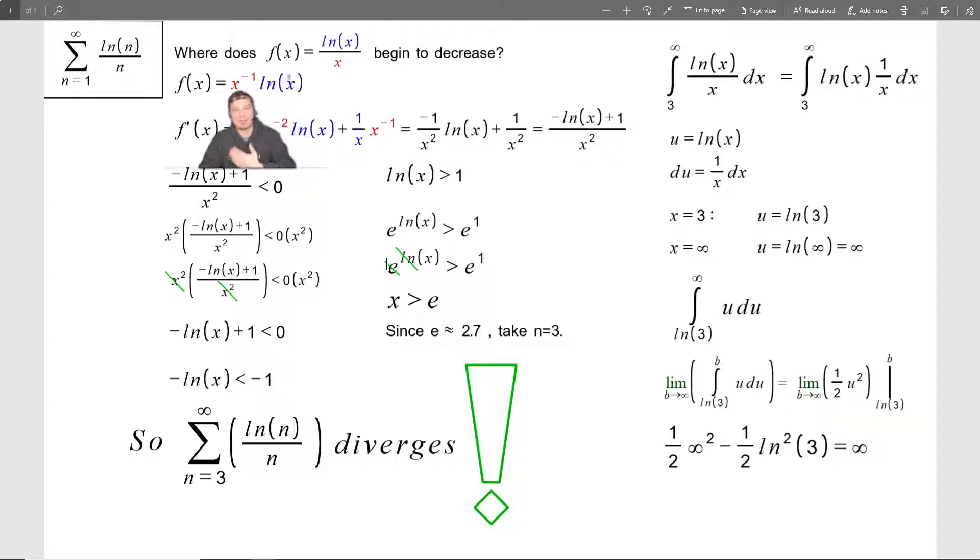So there's a whole lot of stuff happening here. I'm going to write that as x to the negative 1 times ln of x. So f prime of x would be negative 1 times x to the negative 2 times ln of x plus 1 over x times x to the negative 1.